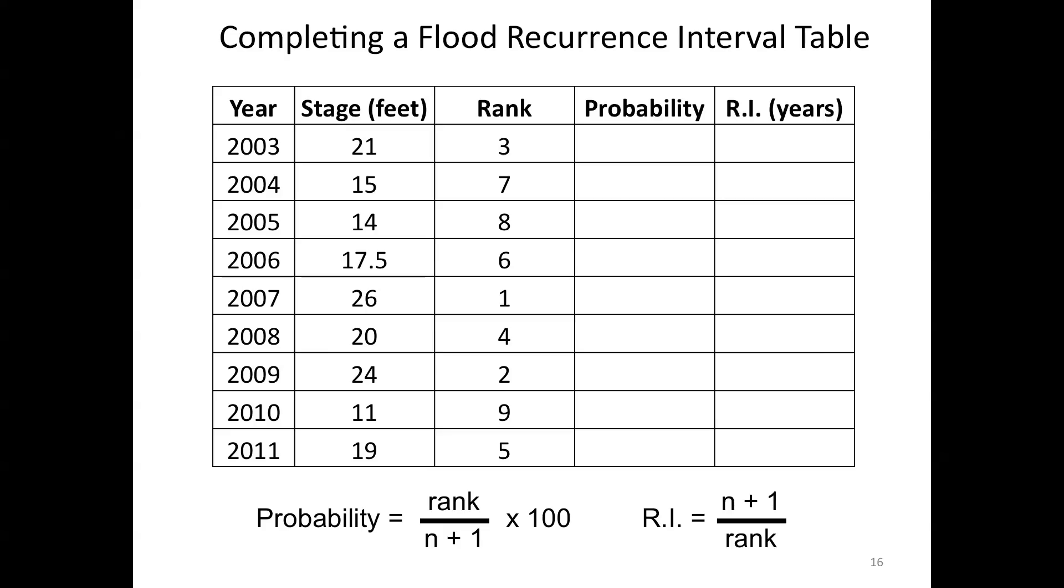And now that we have the ranks, then we can go ahead and calculate probability. And again, that's going to be rank divided by 10 in this case, n plus 1. So rank divided by 10 times 100. And if we do that in order from top to bottom, the probability of the 2003 flood then becomes 30%, 2004, 70. And then I'll just go through quickly and we'll see what these different values are.